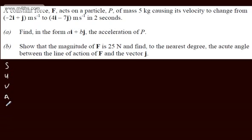U is the initial velocity, V is the final velocity. I'm going to write these in column form. You can of course write them in terms of i and j. I prefer to work in column form. So we're going to have minus 2, 1, and then we're going to have 4, minus 7.